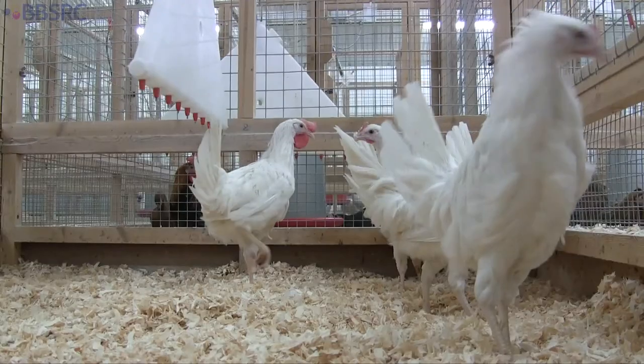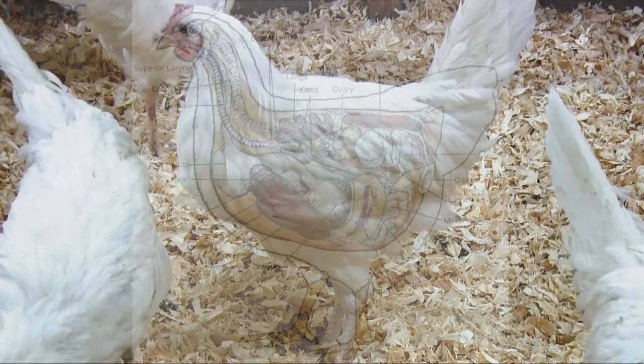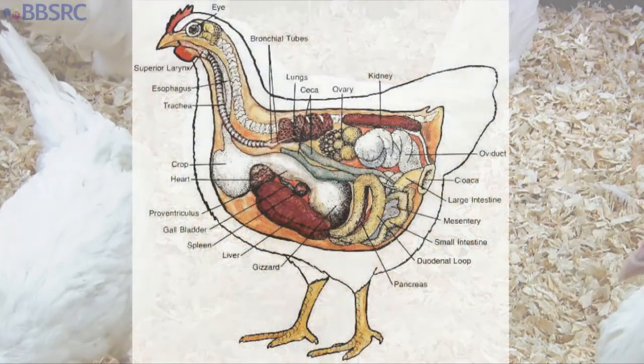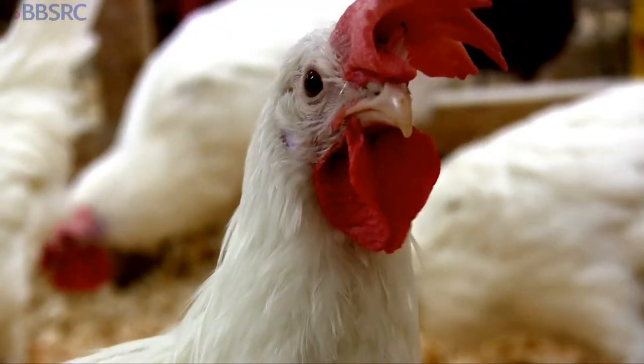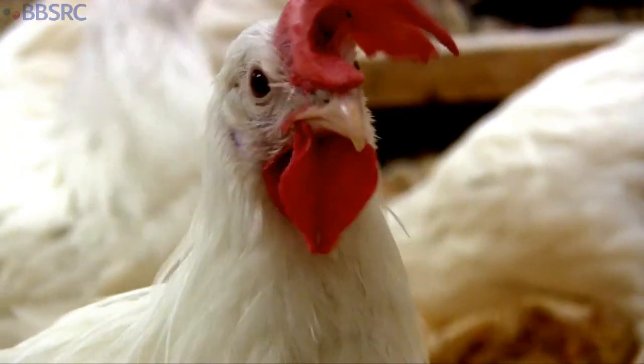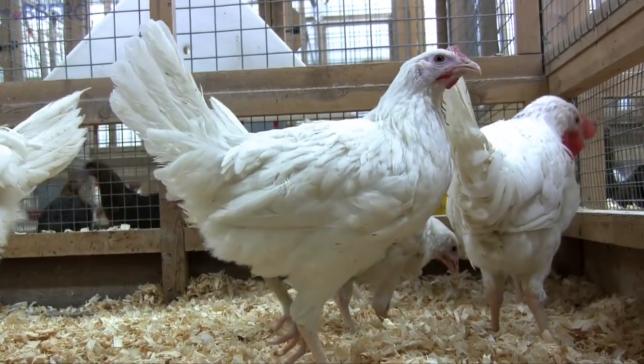We've been very grateful that the BBSRC have supported this project. It speaks to the BBSRC's interest in food security, in healthy food, and avoiding pathogens getting into the human food chain. There are implications for model organism biology and how the chicken develops. We also have a biotechnological angle, in that we have the potential to get useful enzymes coming out of this community.